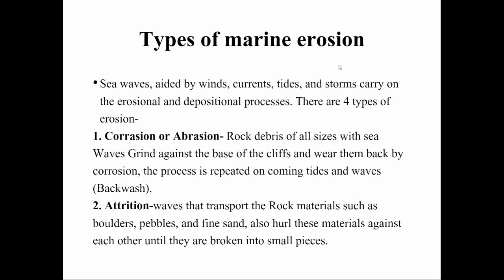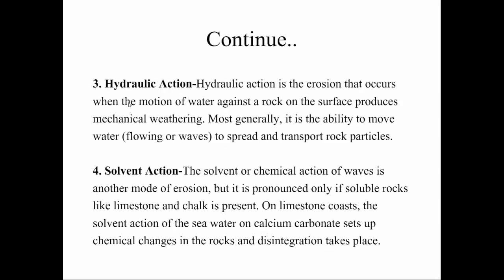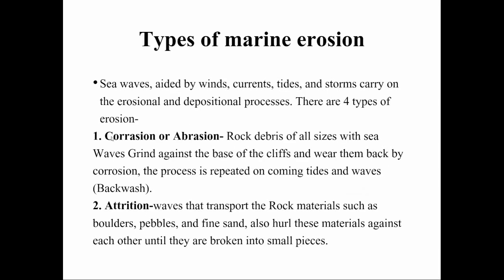Types of marine erosion: sea waves aided by winds, currents, tides, and storms carry on erosional and depositional processes. There are four types of erosion: corrosion or abrasion, attrition, hydraulic action, and solvent action. In corrosion or abrasion, rock debris of all sizes with sea waves grind against the base of the cliffs and wear them back. The process is repeated on coming tides and waves. When debris mixes with sea water and grinds against the cliff base, it produces finer particles — this is known as corrosion.